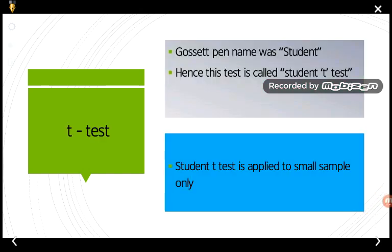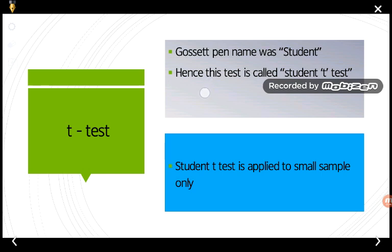It is called the t-test because it was first developed by Gosset, whose pen name or pseudonym was 'Student.' That is why he named this test the Student t-test. This test is also described as t-distribution or t-ratio.